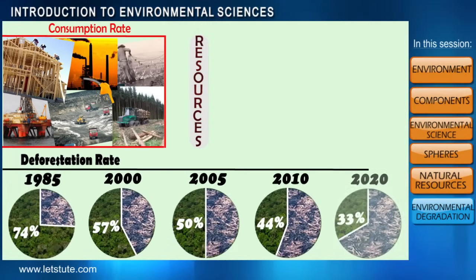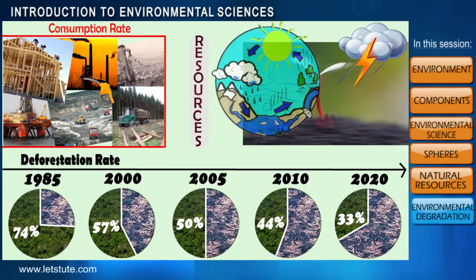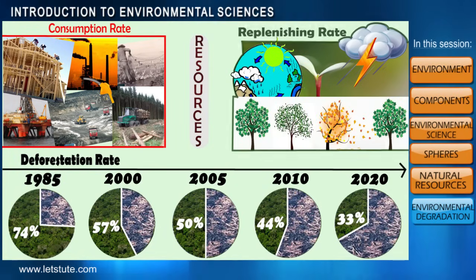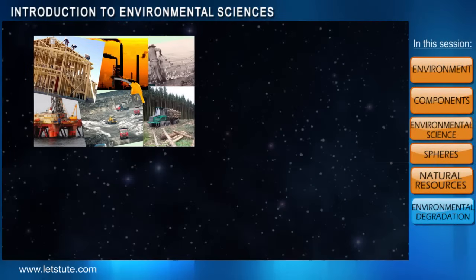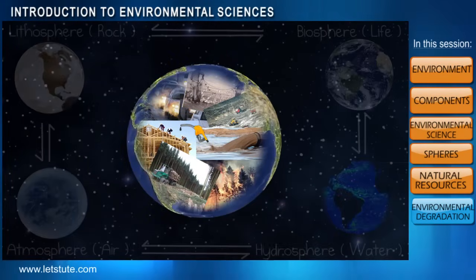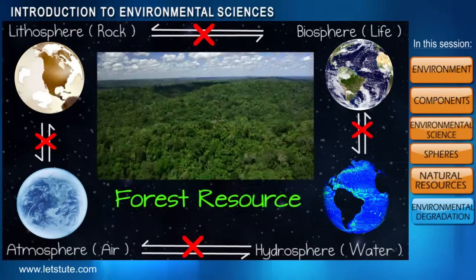To satisfy his increasing demands, man is continuously using these resources and hence they are depleting at a much faster rate. Our planet Earth has its own way to replenish many of these resources, but this replenishing rate is slow compared to the speed at which resources are being consumed. The various activities of man thus affect the balance between the four spheres.